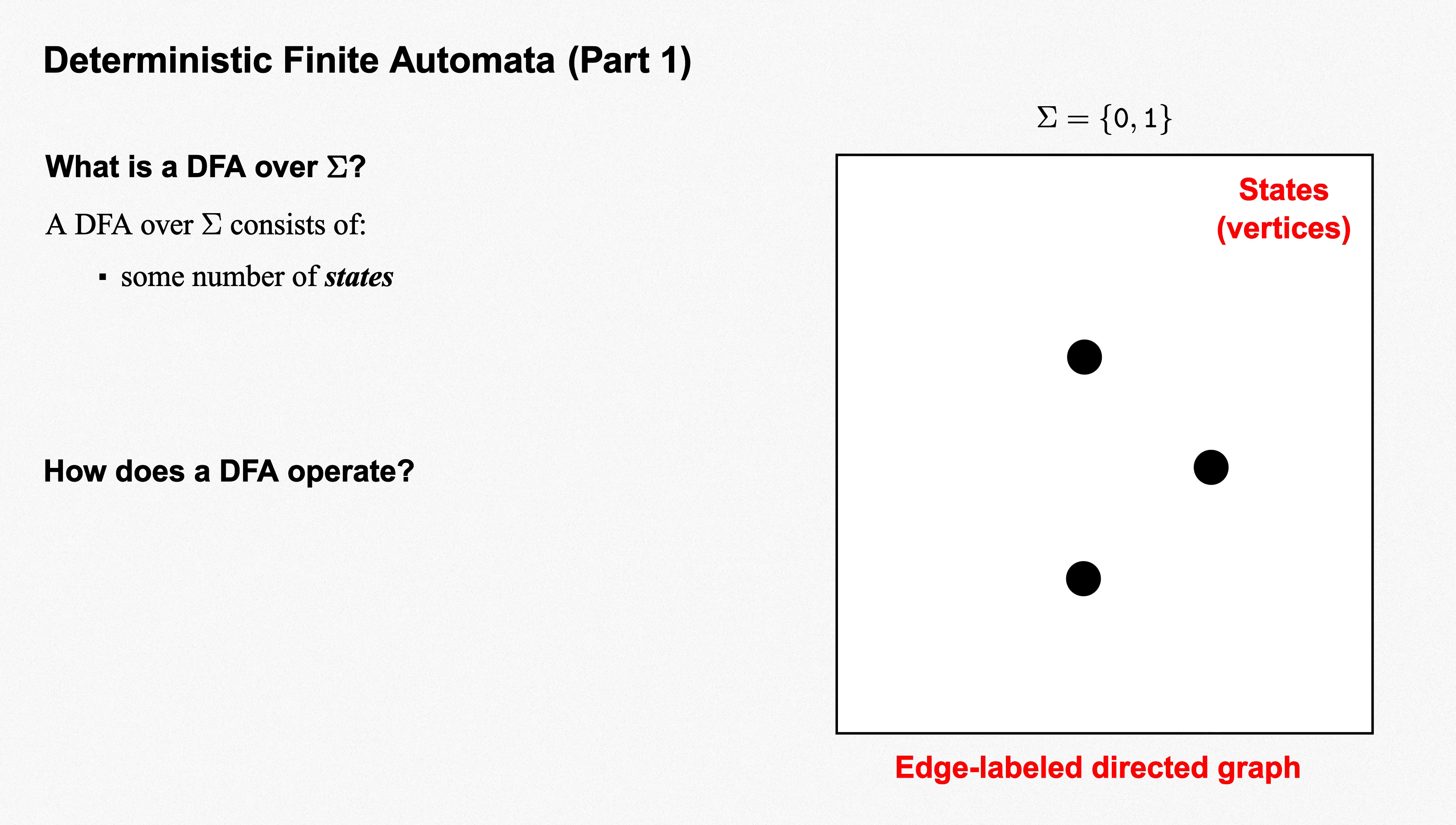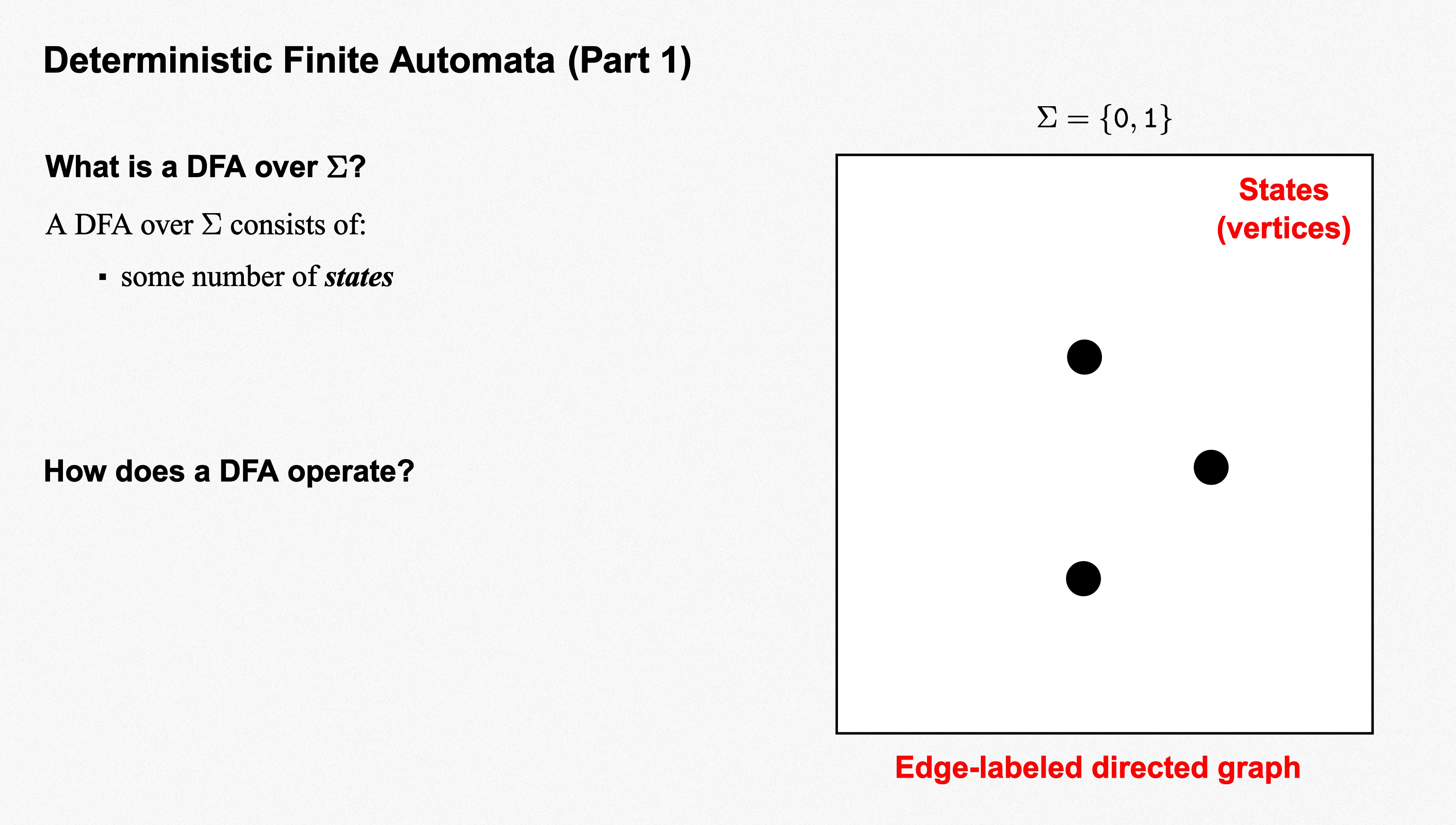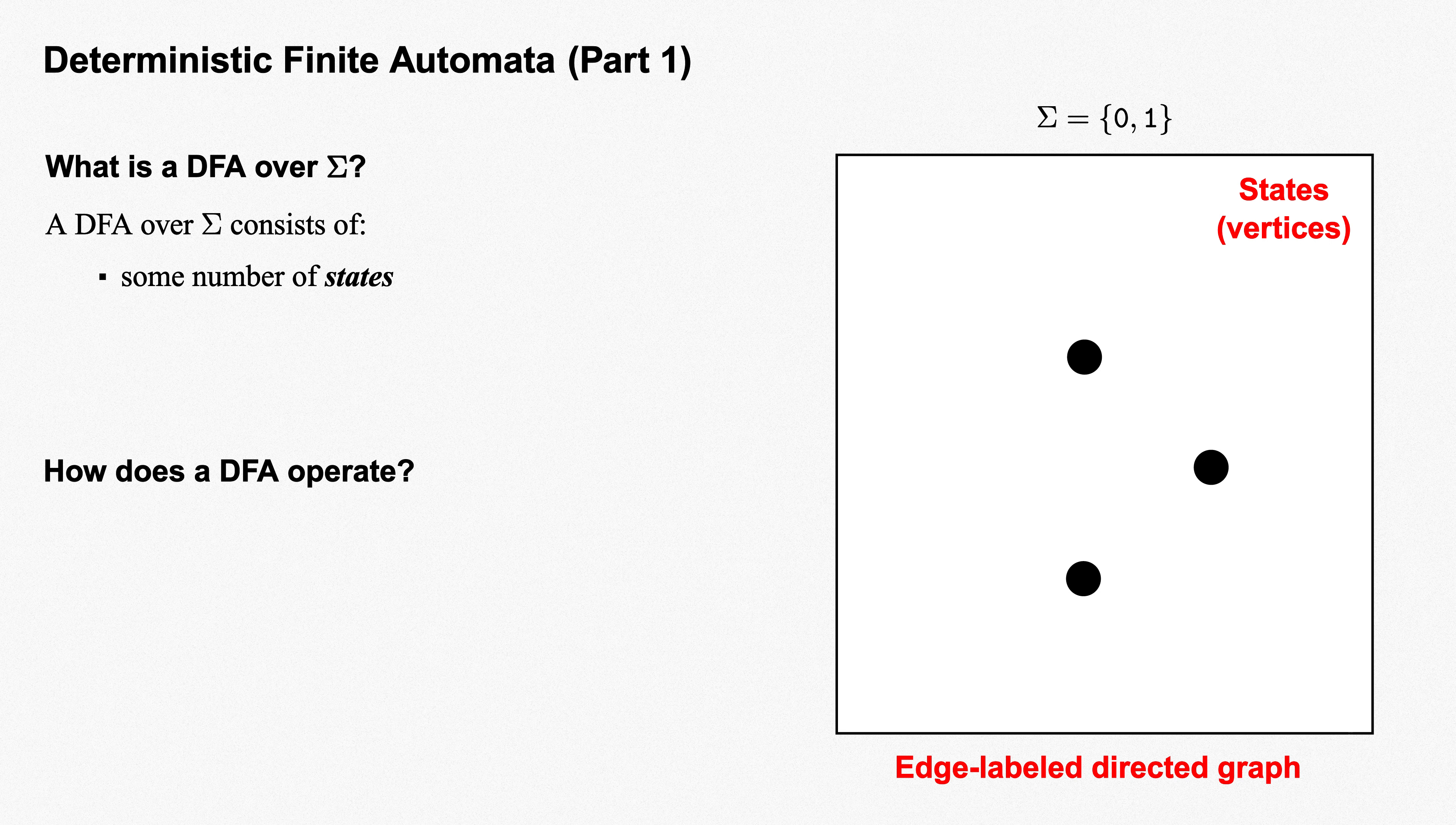Our graph has a finite number of vertices, which we think of as states. We'll see that these states work as a sort of memory for the DFA, via which you can keep track of what's currently going on in the computation it's performing. Literally, the state of the computation.